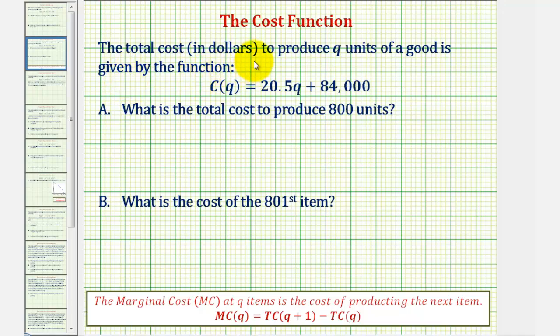The total cost in dollars to produce Q units of a good is given by the function C(Q) equals 20.5Q plus 84,000.